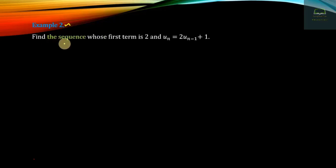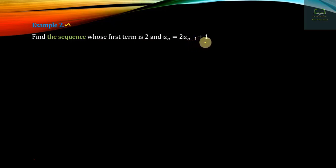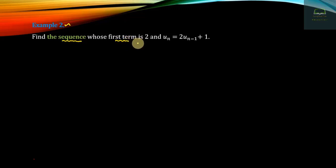We will find the sequence whose first term is u1 = 2, with the recurrence relation u_n = 2 times u_{n-1} plus 1. We will find the sequence, find the first term, and find the recurrence formula.